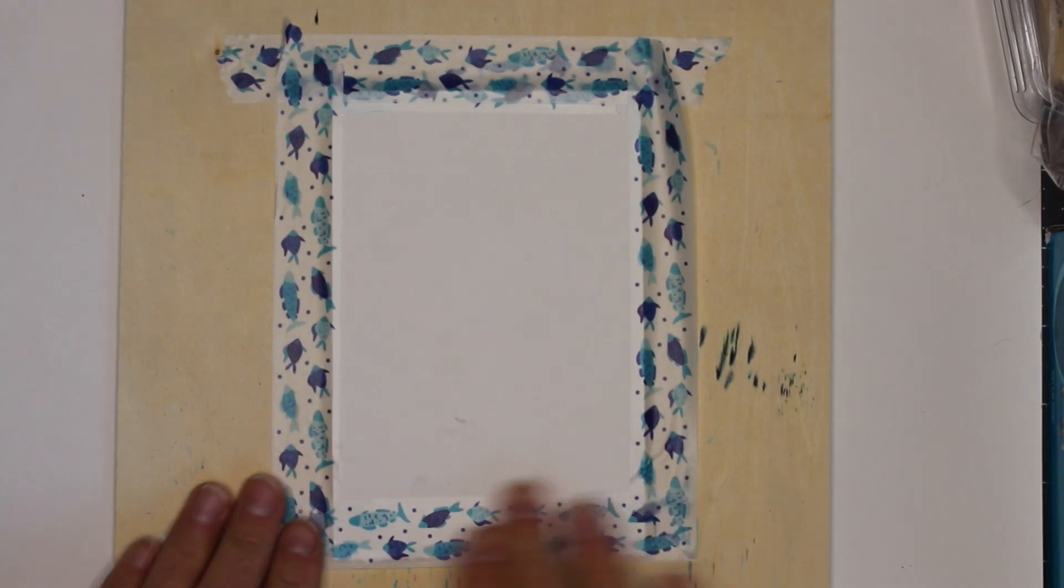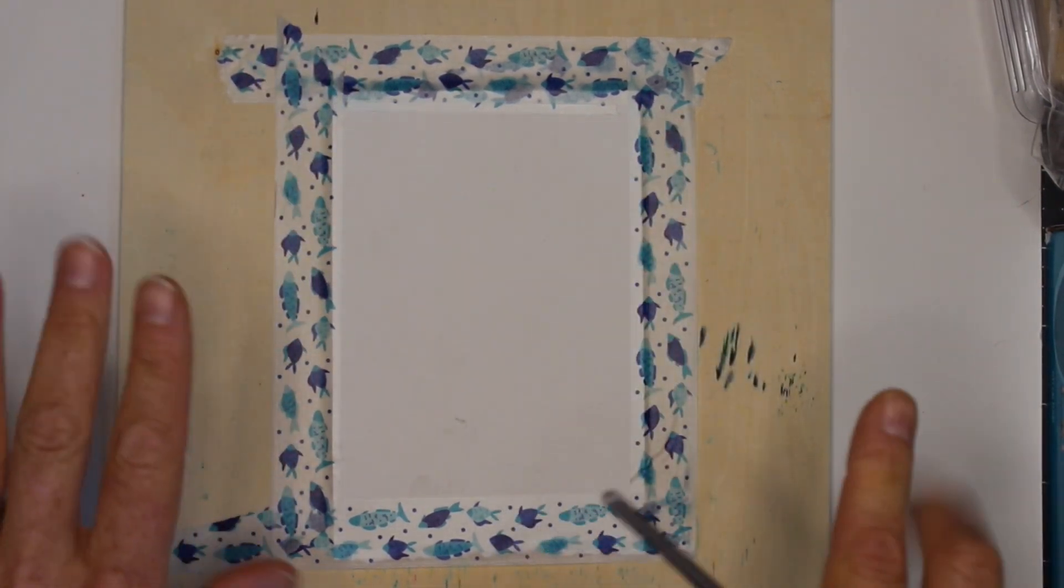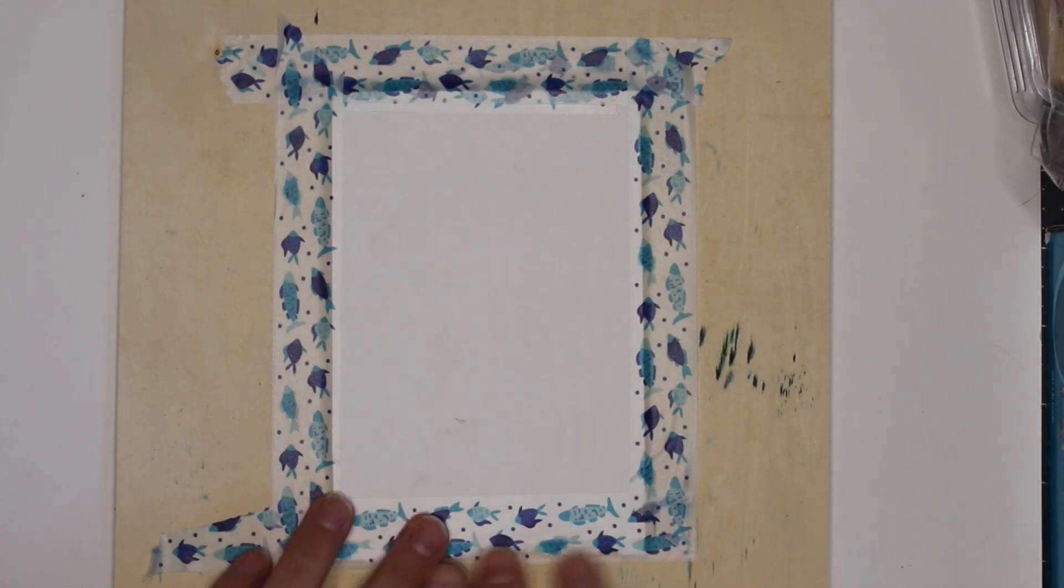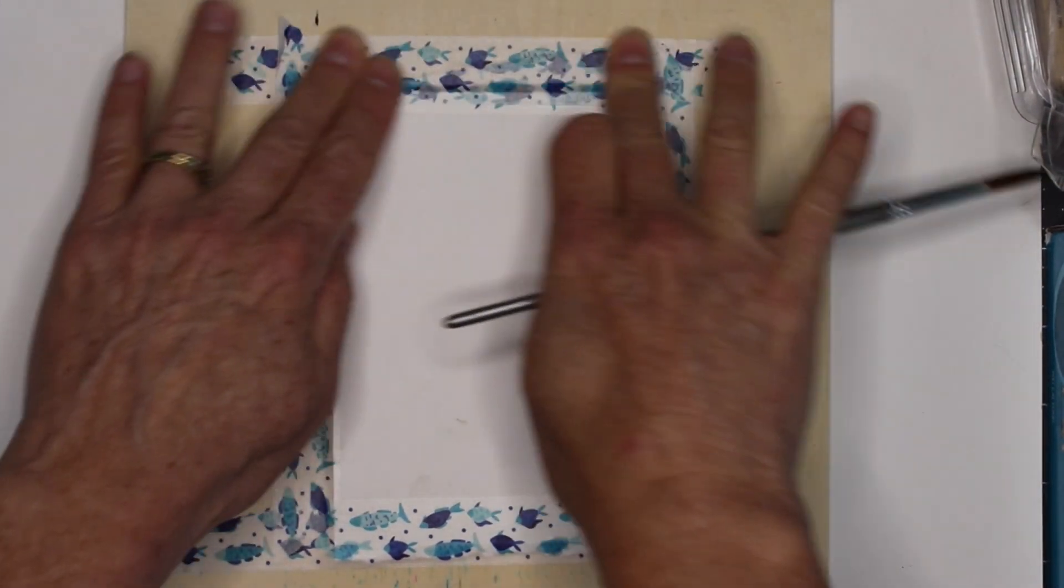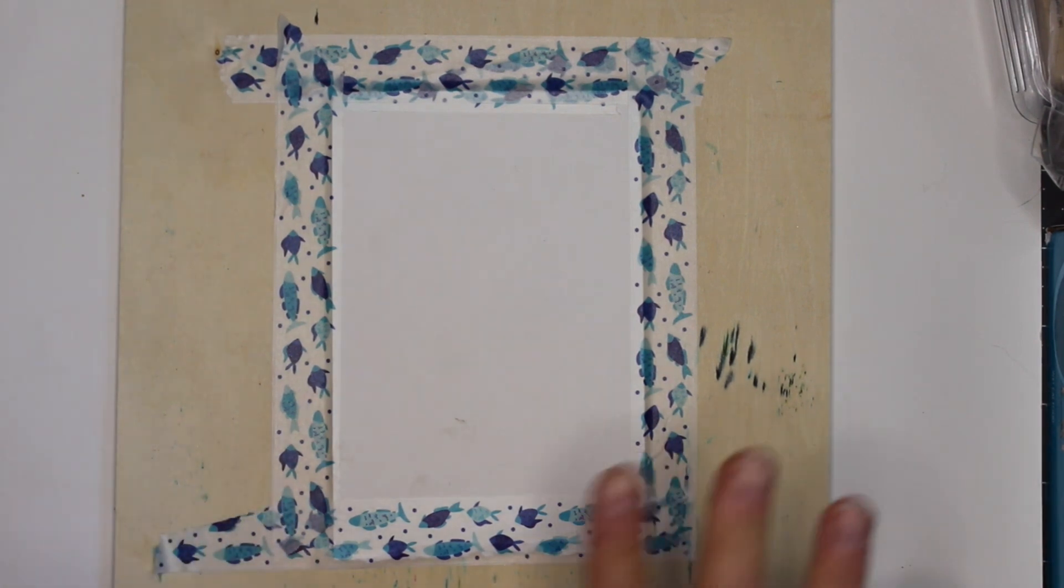The only preparation I did is tape a piece of watercolor paper - this is just from a cheap Canson pad - down to a wooden clipboard. I do that because it has a tendency to warp and I don't really want it to do that, so I just use some washi paper to hold it down.